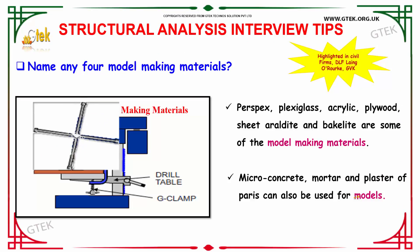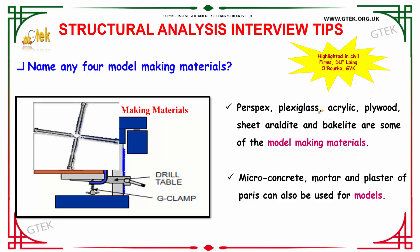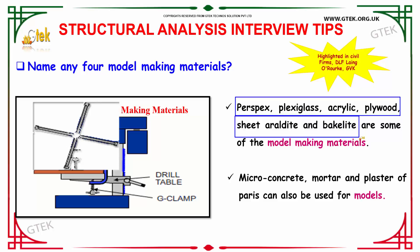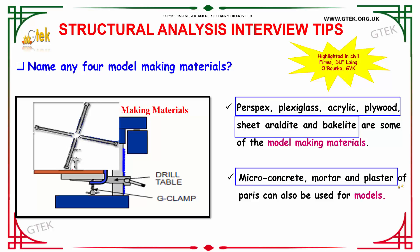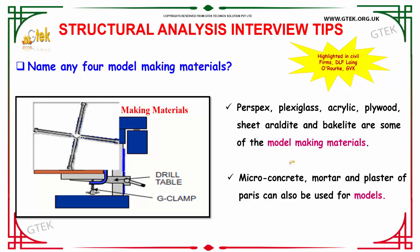The next question is: name any four model making materials. Some model making materials are: perspex, plexiglass, acrylic, plywood, araldite, and bakelite. Micro concrete, mortar, and plaster of Paris can also be used for making models.